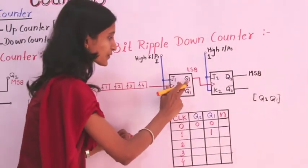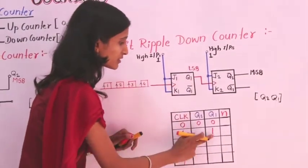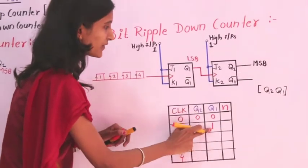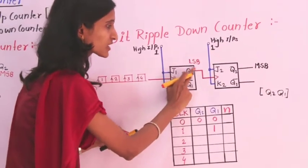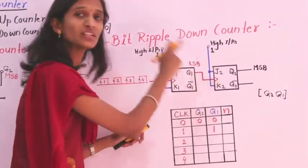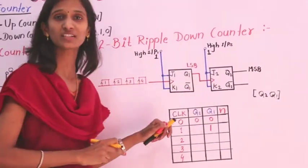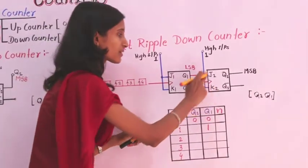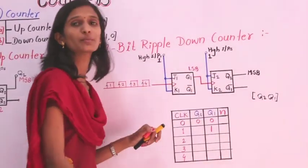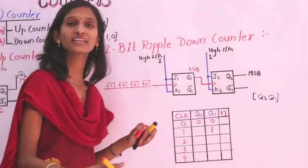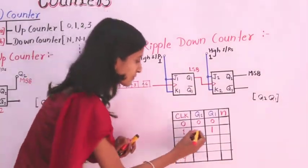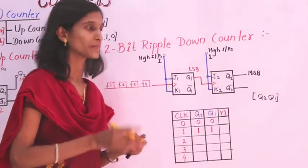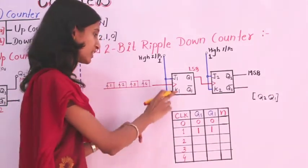Since Q1 is connected to the second flip-flop as its clock input, Q1 = 1 is now applied to the second flip-flop. With clock present, the second flip-flop also gets triggered and toggles — so Q2 becomes 1 as well.